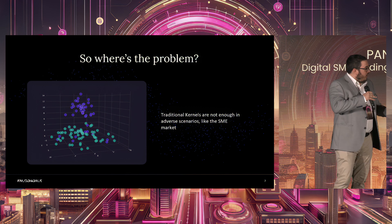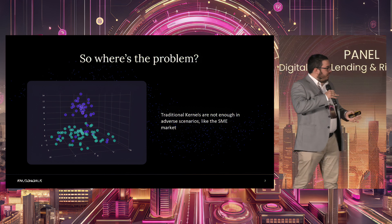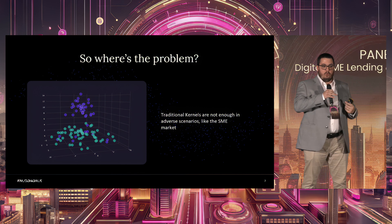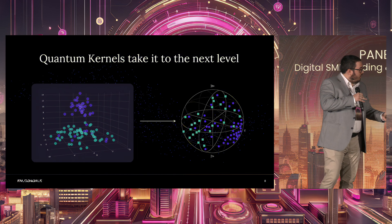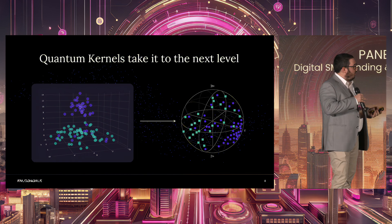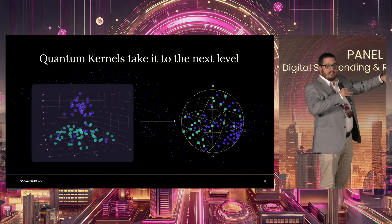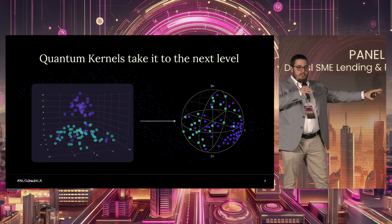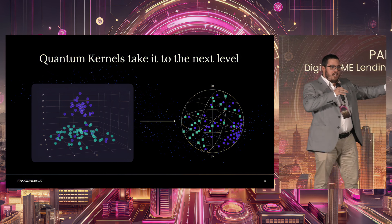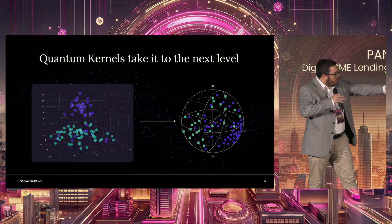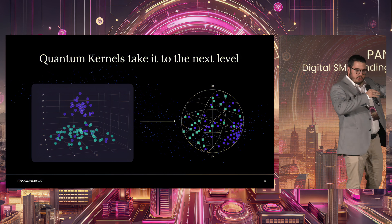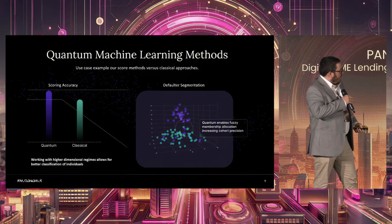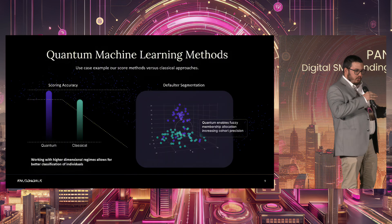More often than not, we don't have it easy when trying to decide automatically which SMEs will be good payers and which will not. What does quantum do with this? Instead of the 3D view, we take it to the next level. The image you see there is called a Bloch sphere — we go beyond 3D kernels. In the Bloch sphere, points look to be more separable. We use vectors within those kernels, using quantum kernels to improve the efficiency of the models.